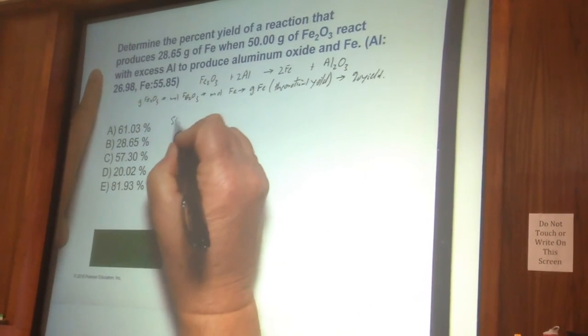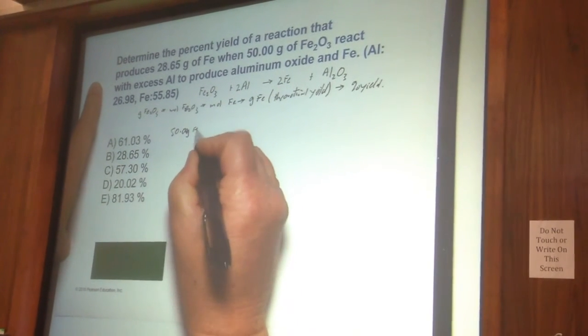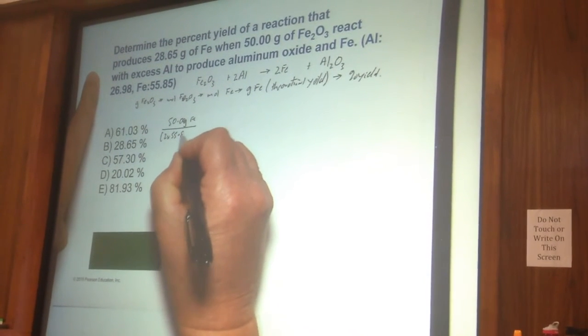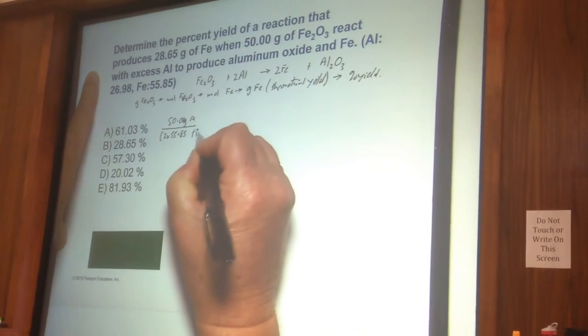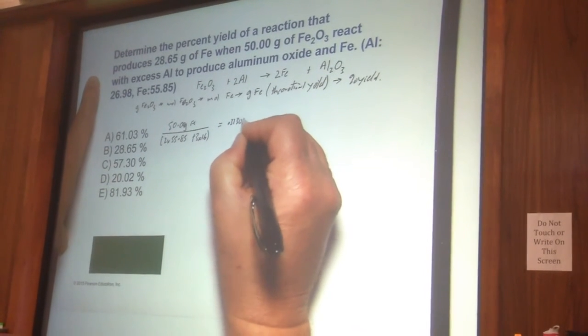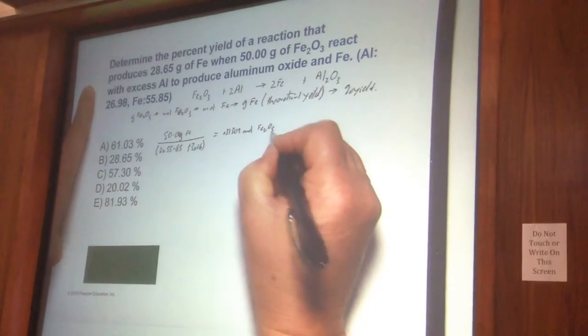So what we're going to do is take our 50 grams of iron oxide, divide that by 2 times 55.85 plus 3 times 16. We get 0.3189 mole of iron oxide.